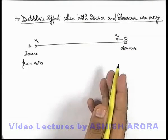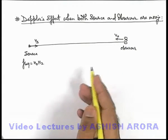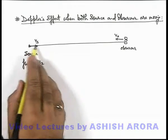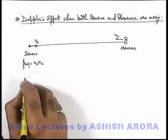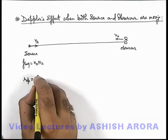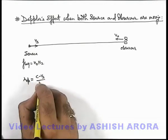In this situation we can directly club the relations which we have studied in previous two sections. Here due to the motion of source, the apparent wavelength changes. Here wavelength will be written as (c - vs)/n₀.